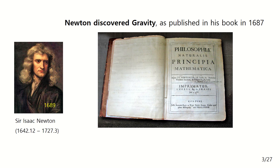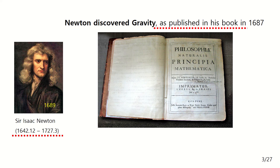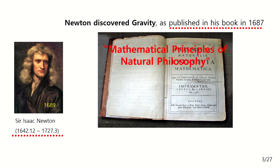In a while, Newton discovered gravity. Newton was a British scientist who worked from the late 1600s to the early 1700s. Newton's theory was published in his book in 1687, as shown here. The book is written in Latin and the title is Mathematical Principles of Natural Philosophy.